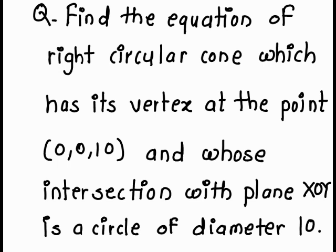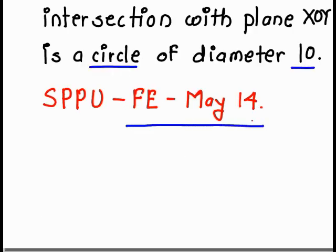Find the equation of a right circular cone which has its vertex — underline the keyword vertex — at the point (0, 0, 10), and whose intersection with the plane XOY is a circle of diameter 10. This question was asked in SPPU Pune University for first year engineering in May 2014.